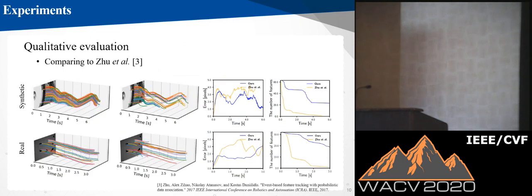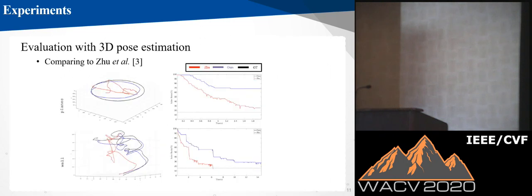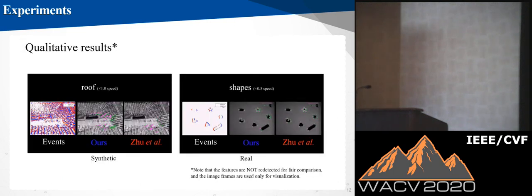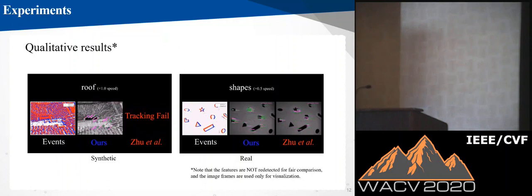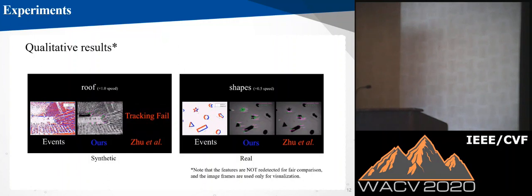This is an example of qualitative results, and the graph shows the comparison of our method and other methods. We applied our method to the camera pose estimation problem, and our method shows better performance in terms of accuracy and the number of inliers. You can see the comparison result in the video.